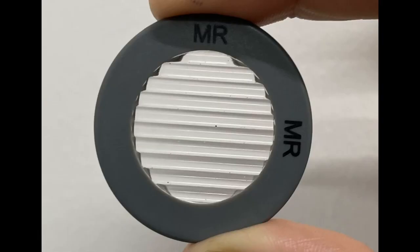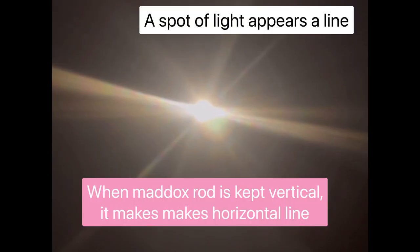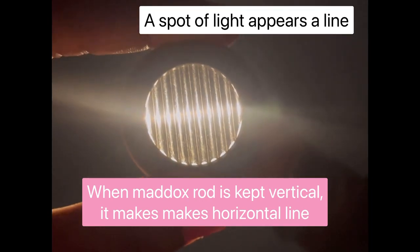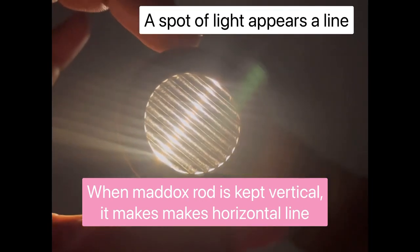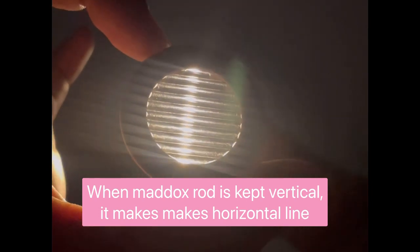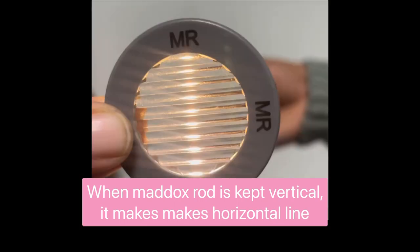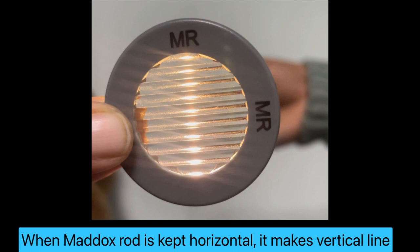Please remember that Maddox rod contains parallel plano-convex lenses which reflects light rays so that a point source of light appears as a line or streak of light. And this line is seen perpendicular to the axis of the cylinder. When Maddox rod is kept vertical, it makes horizontal line, and when it is kept horizontal, it will make a vertical line which you can see clearly in this picture.